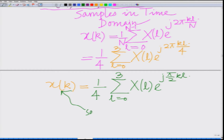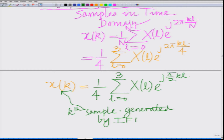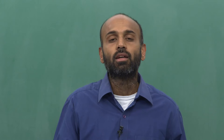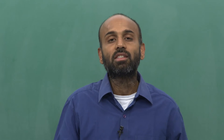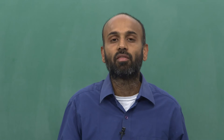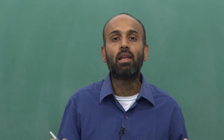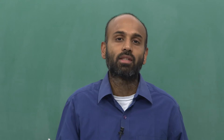This is the kth sample generated by the IFFT. Now, we are not simply transmitting the samples — we are adding a cyclic prefix. That is, we take some samples from the tail of the block and prefix them at the head of the block. In this example, we have taken one sample, but one can take more depending on the length or number of taps in the channel response.